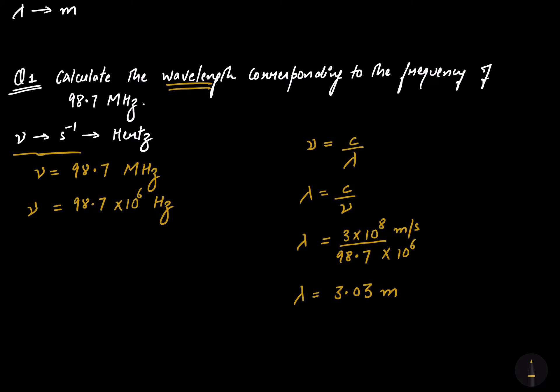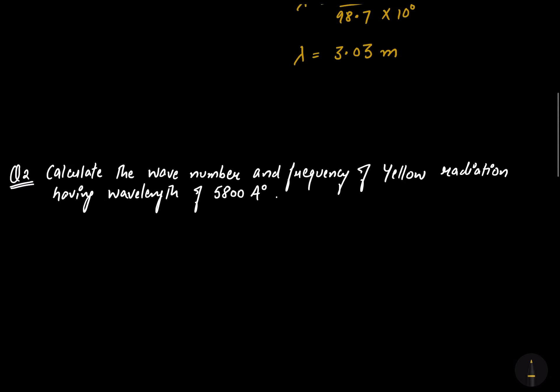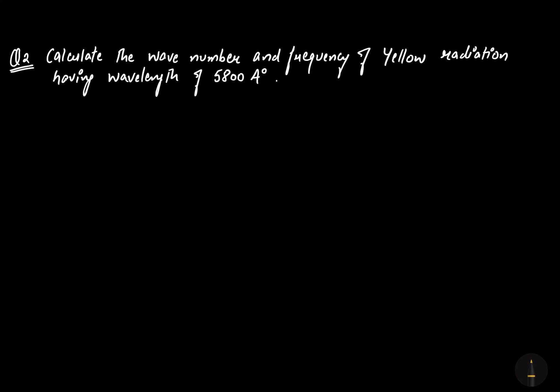Hopefully you got the first numerical. Now let's move to the second numerical. It asks us to calculate the wave number (nu-bar) and the frequency (nu) of yellow radiation having a wavelength of 5800 angstroms. Let's calculate the frequency first using nu = C / lambda.